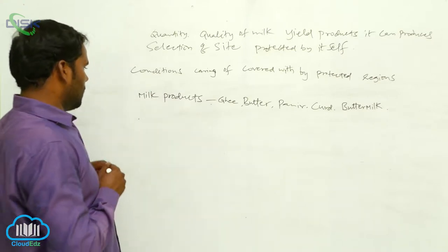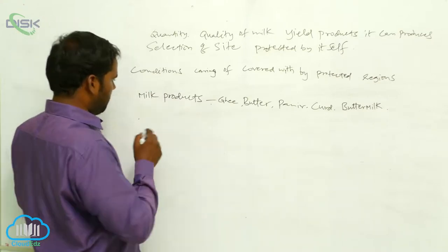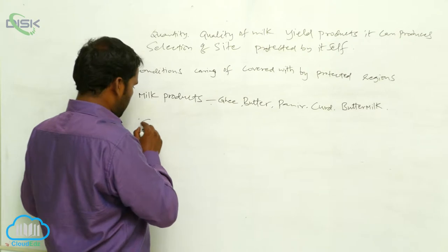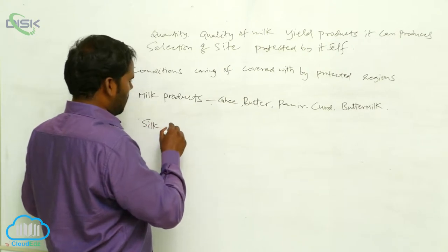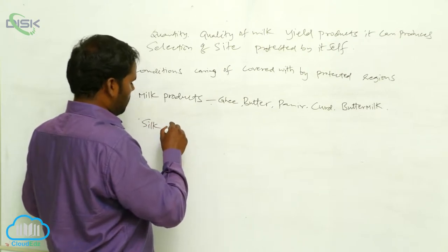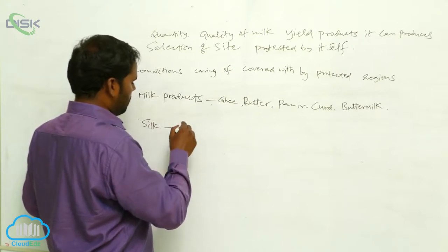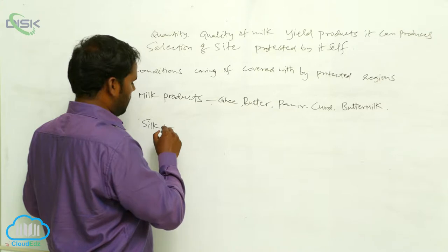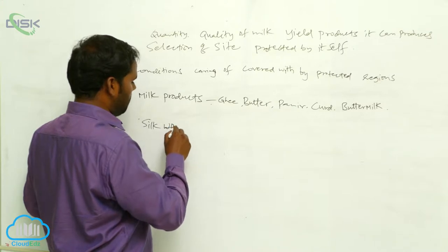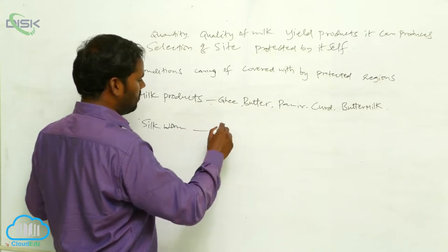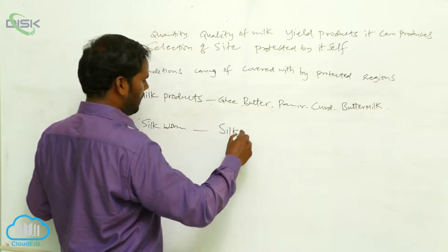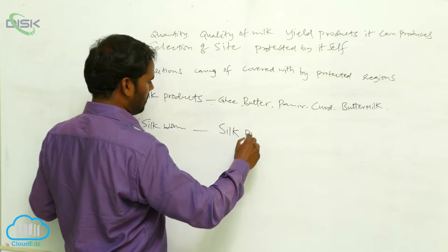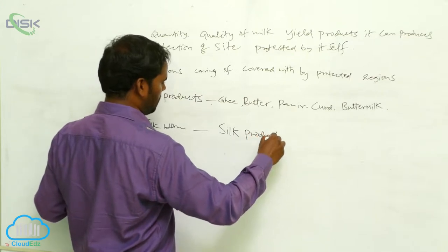Next, silk. The silkworm gives silk — silk products can be produced from it.